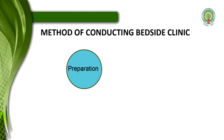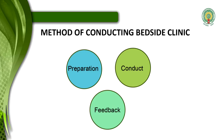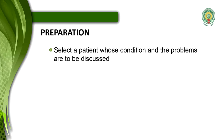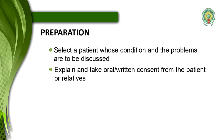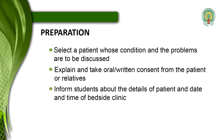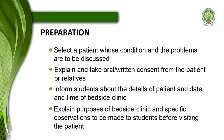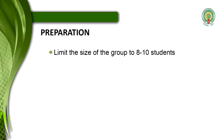The method of conducting the bedside clinic has three phases: preparation, conducting, and feedback. In the preparation phase, select a patient whose condition and problems are to be discussed. Explain and take oral or written consent from the patient or relatives. Inform students about the details of the patient and the date and time of bedside clinic. Explain the purposes of bedside clinic and specific observations to be made to students before visiting the patients. Limit the size of the group to 8 to 10 students.